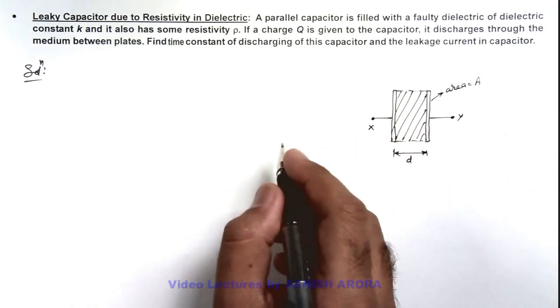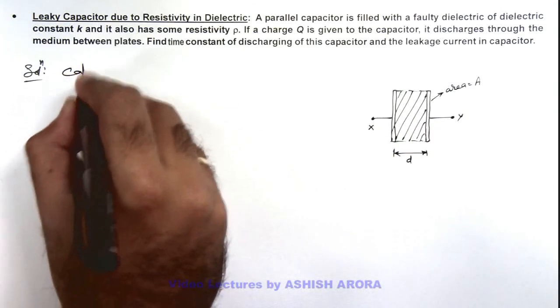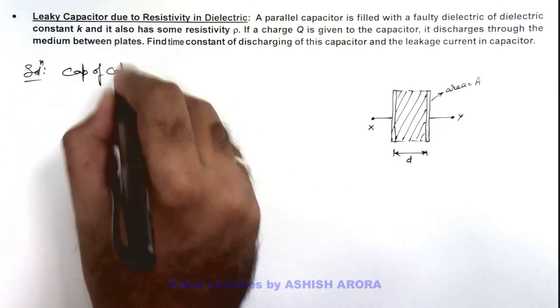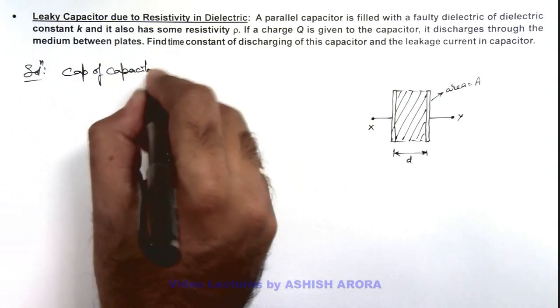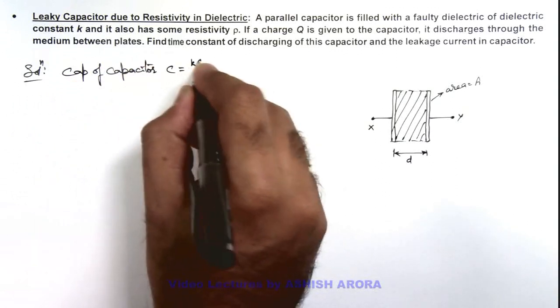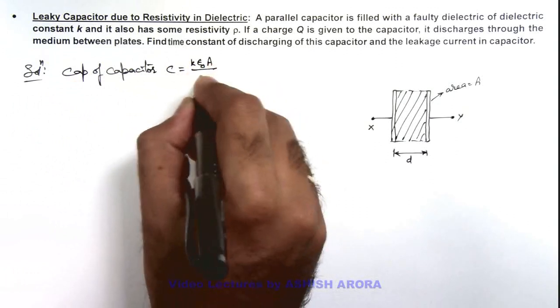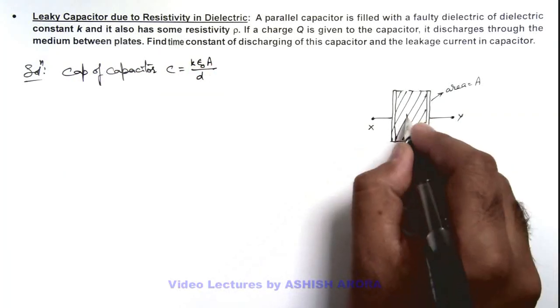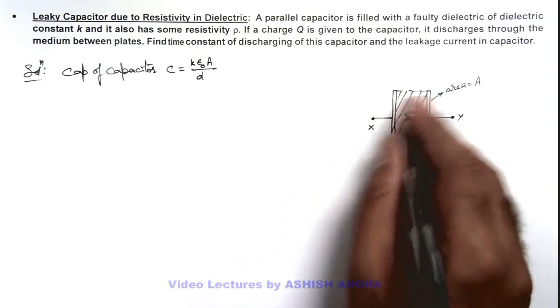Then we know in this situation, the capacitance of the capacitor can be written as C equals k epsilon naught A by d, where k is the dielectric constant of the medium which is filled between the plates.